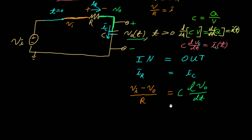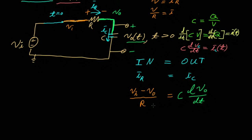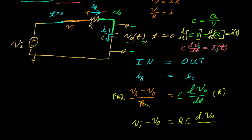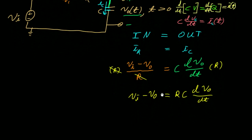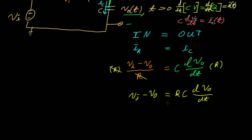Now let's rearrange the equation. Multiplying both sides by R, the R's cancel on the left, giving VI minus V0 equals RC times dV0/dt. Then adding V0 to both sides, we get our first order differential equation: VI equals RC times dV0/dt plus V0.